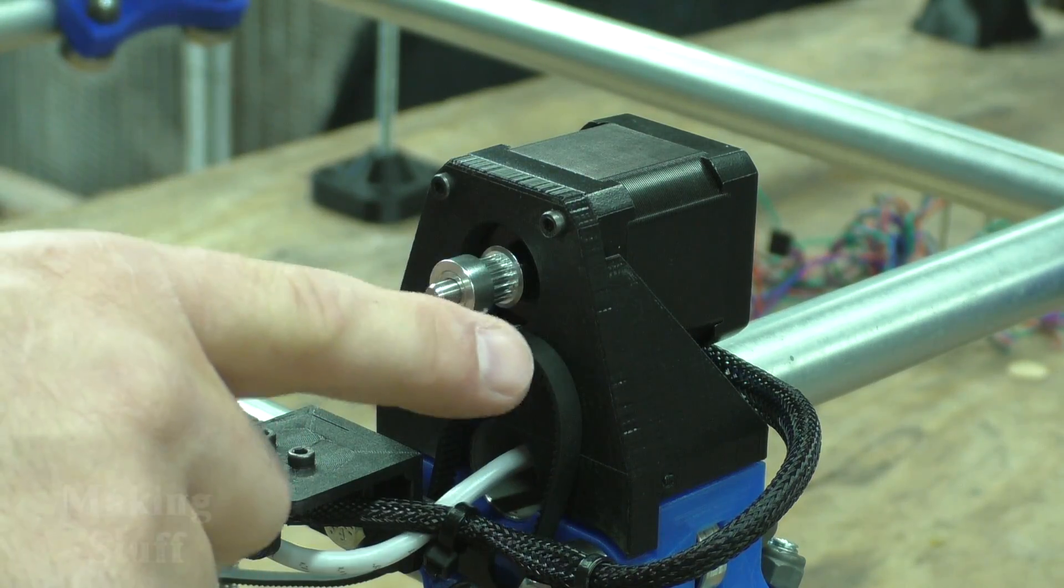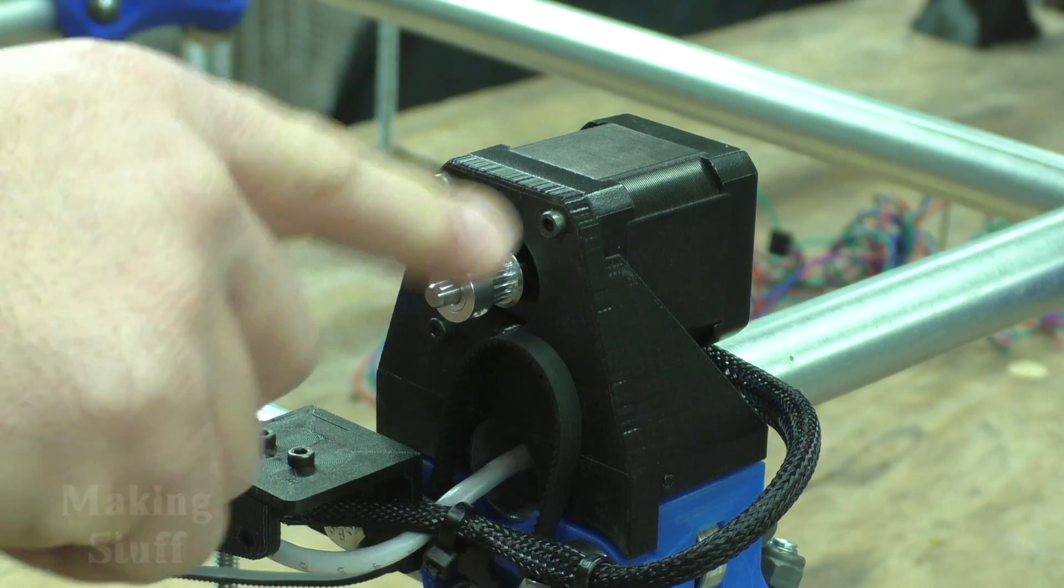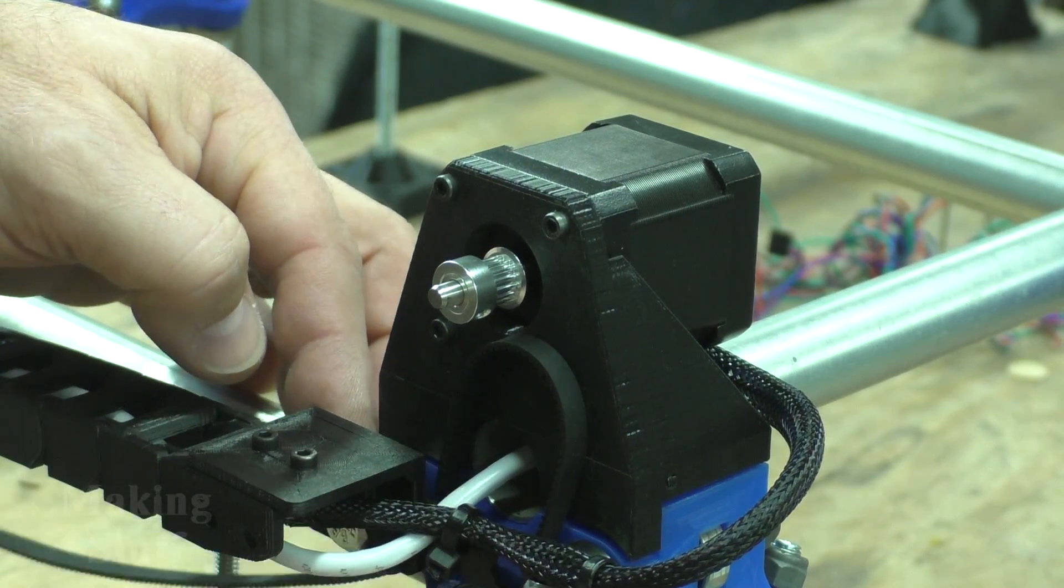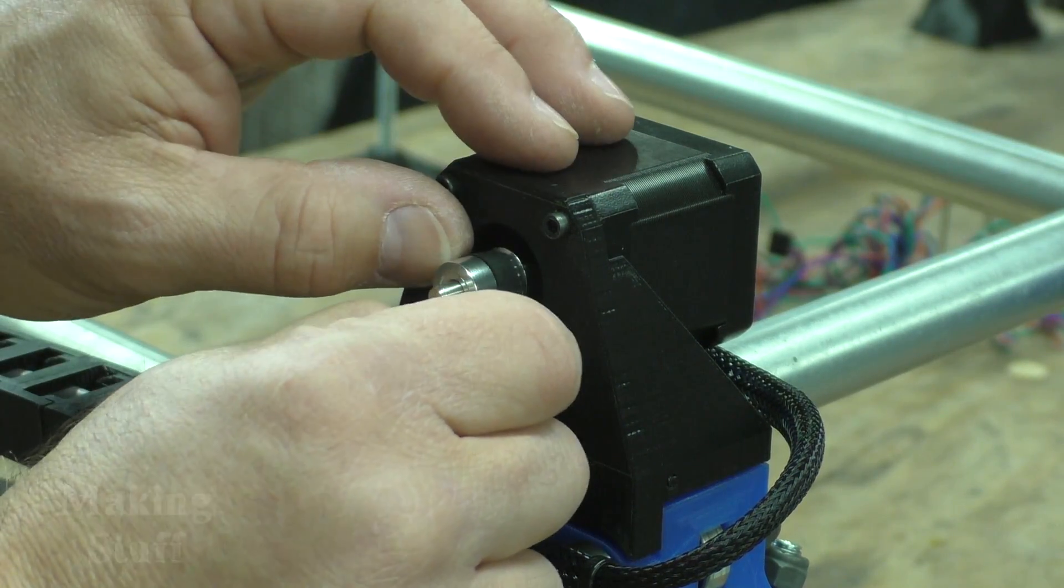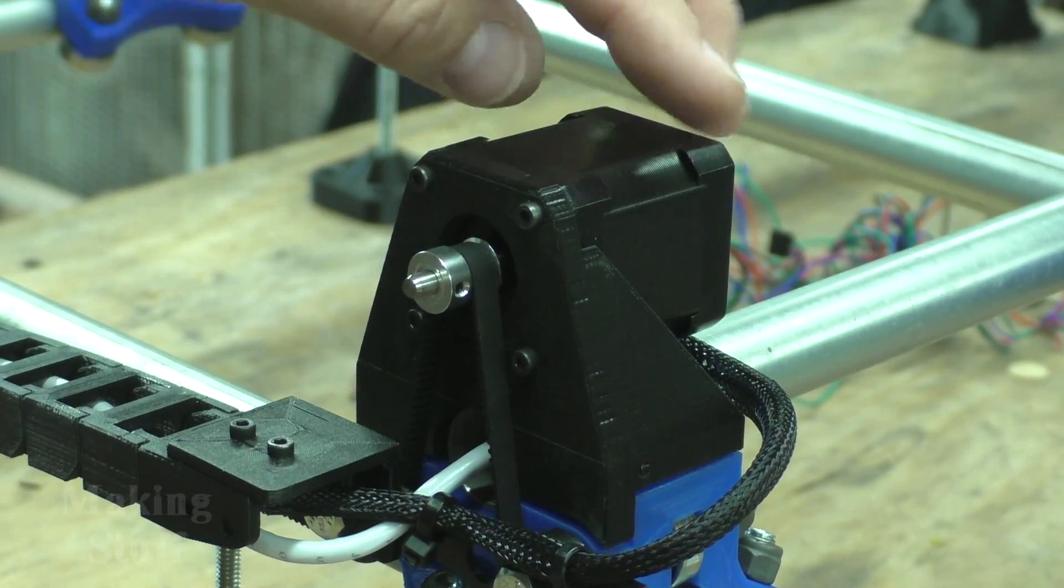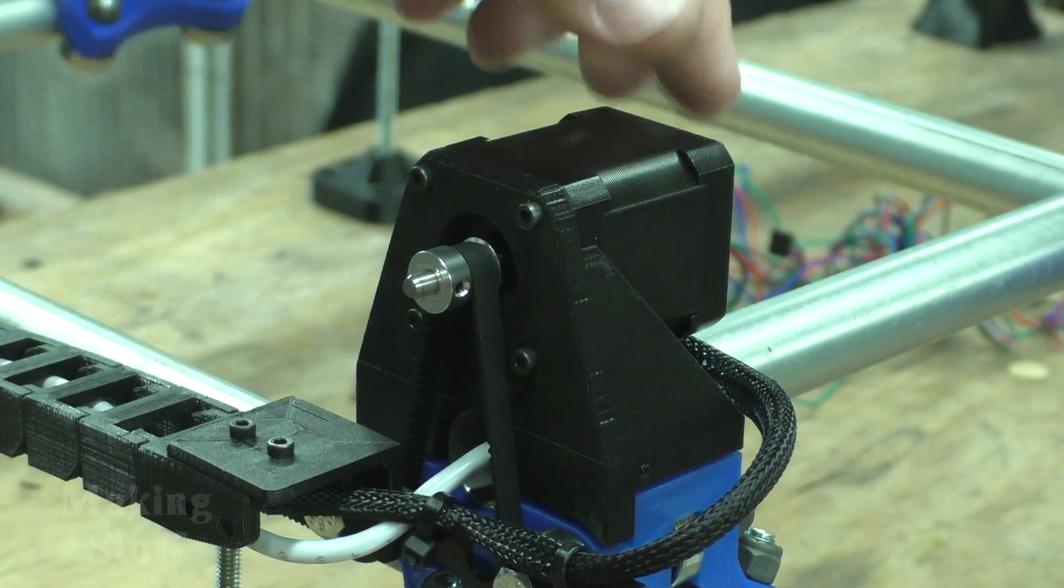On the motor I have mounted my GT2 16 tooth pulley and the belt will go underneath one of the bearings, over the top of the pulley and then underneath the next bearing so that it makes a V-shape like so.